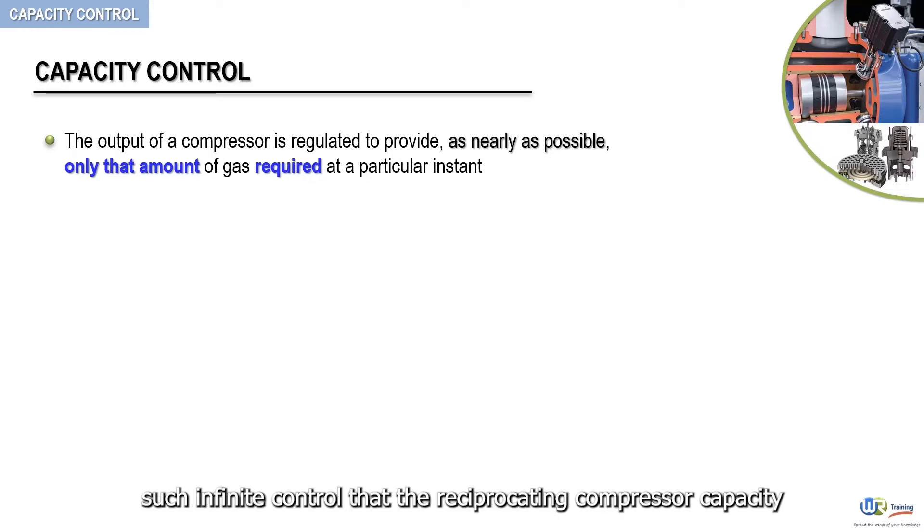The ideal governing arrangement would be to obtain such infinite control that the reciprocating compressor capacity would be exactly equal to the demand at all times. For an installation to be successful, the controls on the compressor must function properly.